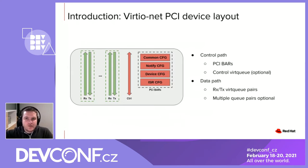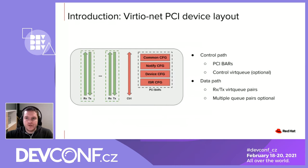Here we have the layout of a Virtio Net PCI device. We can split it into two main parts: the control path in red and the data path in green. The control path is composed of PCI bars which include several structures, such as the common config — a generic structure containing fields used for feature negotiation, to specify the number of queues supported by the device, where we can find the device status, or the virt-queue addresses. We also have the notification-related config and the device config, which is device-type specific. In our case it is called Virtio Net config, and its fields contain information such as the device MAC, the link state, or the maximum MTU.